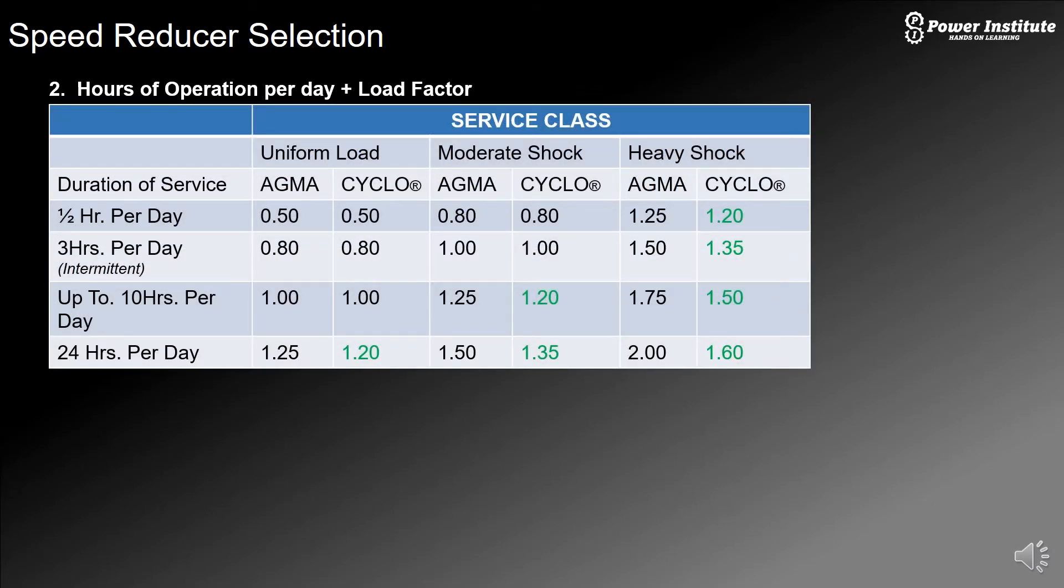Then we have the load factors. Load factors are determined by AGMA, American Gear Manufacturers Association, based on the loading and runtime. But with our cyclo, the way it's designed, we have the 500% shock load. So there are a few situations where we can go a little bit light on the service factor compared to AGMA because of its design. For uniform load 24 hours a day, we can do a 1.20 where AGMA recommends a 1.25. If you're tight on service factor, the cyclo definitely gains robustness because of its design.